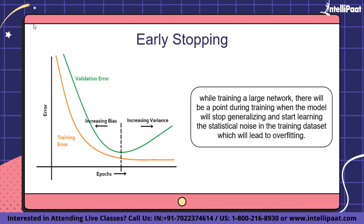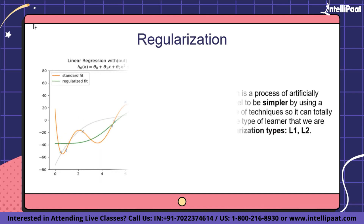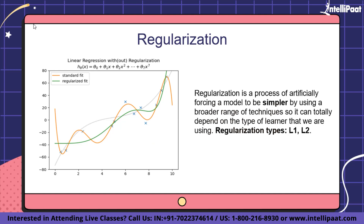Instead of over-training the model, we should stop at the optimal point shown on the graph. The challenge is to train the network long enough that it learns the mapping of inputs and outputs, but not so long that it overfits. One solution is holdout training: the model is evaluated on a holdout validation dataset after each epoch. If performance on the validation dataset starts to degrade — loss increases, accuracy decreases — training is stopped. This is called early stopping and is one of the oldest and most widely used forms of neural network regularization.